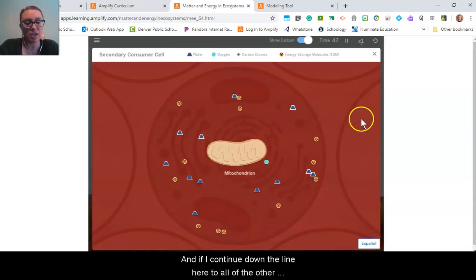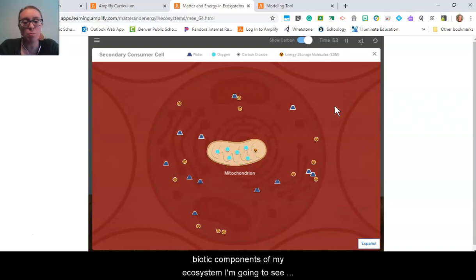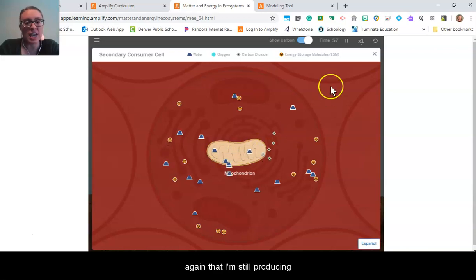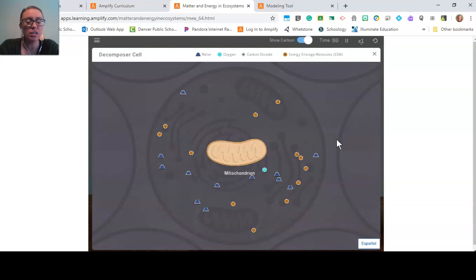And if I continue down the line here to all of the other biotic components of my ecosystem, I'm going to see again that I'm still producing carbon dioxide from my mitochondria, which means I still have cellular respiration occurring.